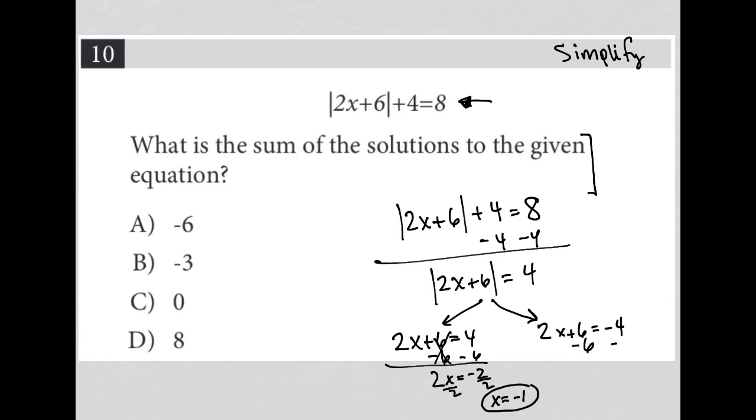Same thing on this side. Subtract 6 from both sides. I'm left with 2x equals negative 10. Divide both sides by 2. And I have x equals negative 5 as another solution.